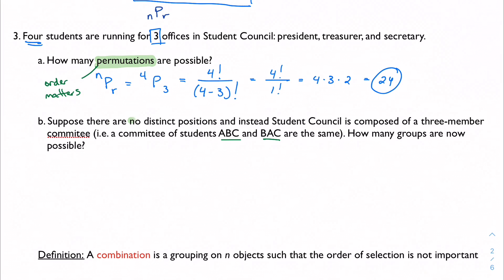Well, let's suppose that there are no distinct positions anymore. Instead, my student council is going to be composed of just a three-member committee. And that means that a committee of students A, B, and C and B, A, and C are the same no matter what order I take them in. How many groups are there now?